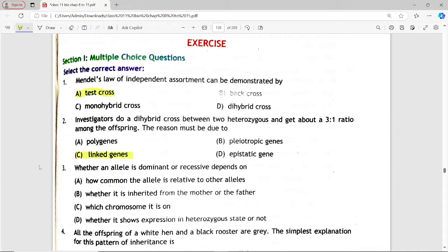Next is: Whether an allele is dominant or recessive depends on? Options are: how common the allele is relative to other alleles, whether it is inherited from the mother or the father, which chromosome it is on, whether it shows expression in heterozygous state or not. Answer is option D, whether it shows expression in heterozygous state or not.